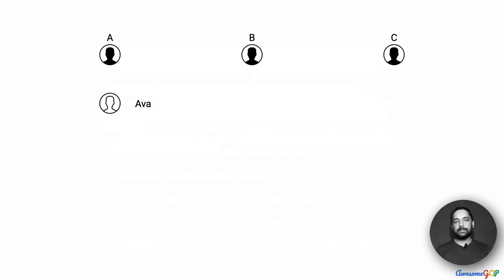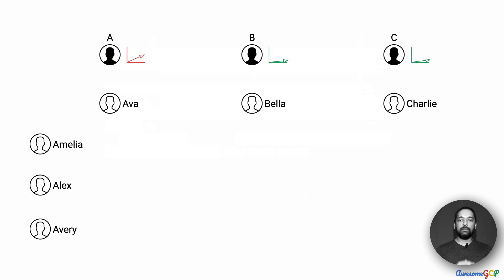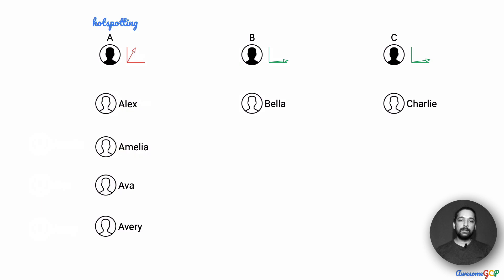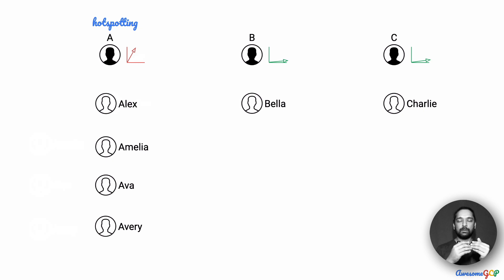Let's take an example where people are coming into a group and there are managers responsible for keeping them sorted. When Ava comes in, she goes into the A column. When Bella comes in, she goes into the B column, and Charlie is put in the C column. When new people enter the system — say all of them have names starting with A: Amelia, Alex, and Avery — they clearly have to go in the A column, which means the load on A is going to increase. This causes considerable increase in load for A while B and C have nothing to do. When there is a read request for all people whose name starts with A, the A column is heavily utilized while the others remain idle.